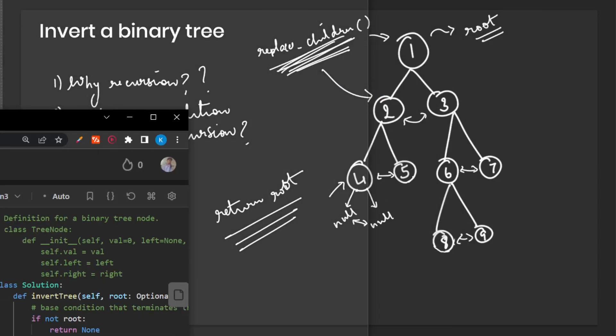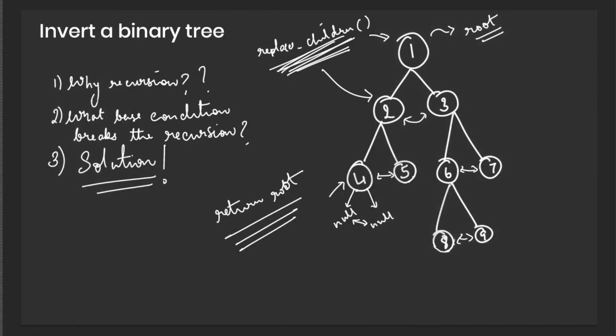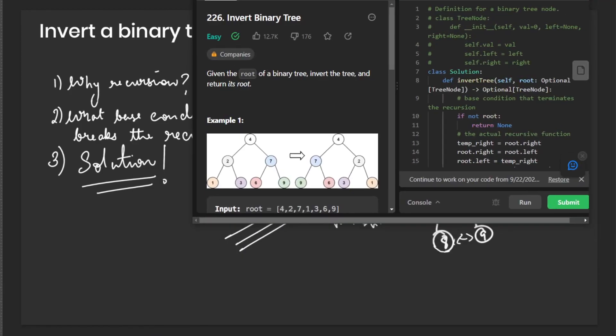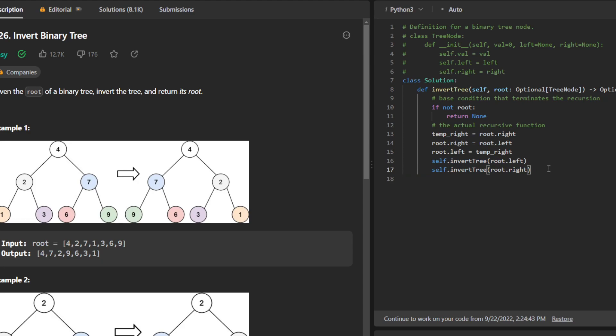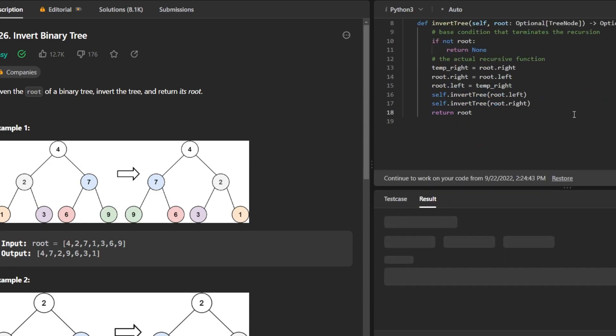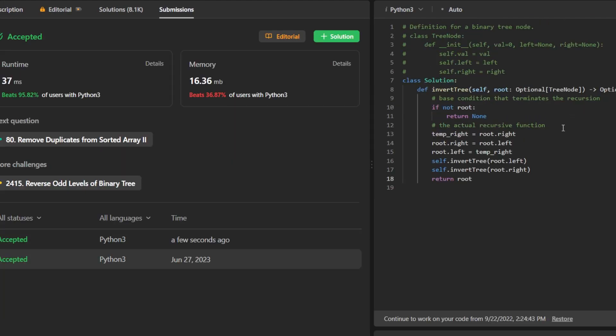now you might start seeing parallels with this. In our previous case as well, we replace the children. So we replace these with each other. And then we need to go to their children and replace them with each other. That's what we're doing here. And then at the end of this function, we must return the root. And that's it.